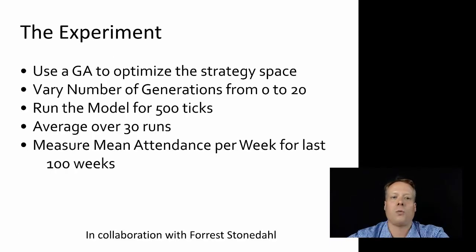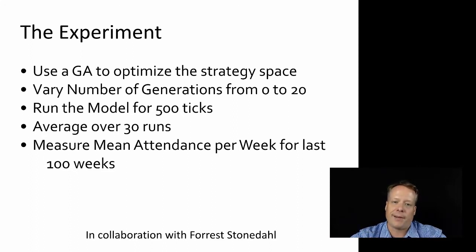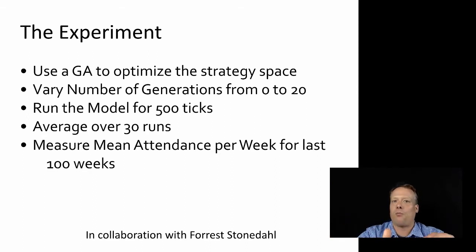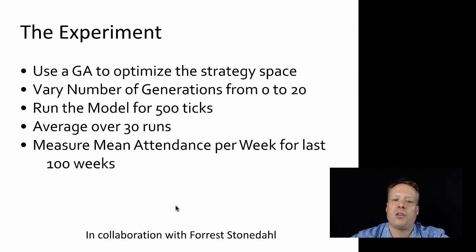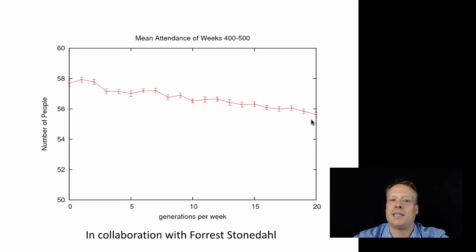I worked with Forrest Stonedahl, who was also with Uri Wilensky, and we designed a genetic algorithm to optimize the strategy space in the El Farol NetLogo model. We varied the computational power available to each agent from zero to 20 generations, scaling how much effort each agent put into predicting next week's attendance. We ran the model for 500 ticks, averaged over 30 runs, and measured mean attendance per week for the last 100 weeks. Sure enough, as we increased computational power, the average attendance at the bar went down.